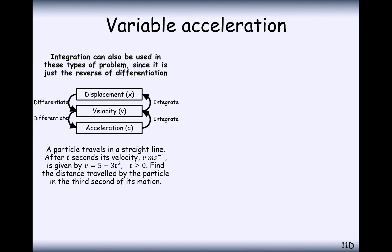Second question. A particle travels in a straight line. After t seconds, its velocity is v, where v is equal to 5 minus 3t squared. Given that t is greater than 0, find the distance traveled by the particle in the third second of its motion.